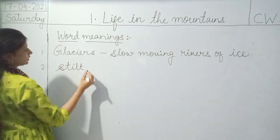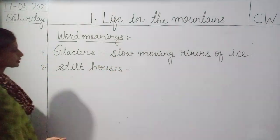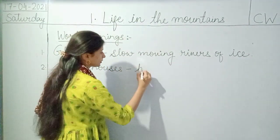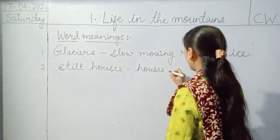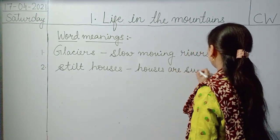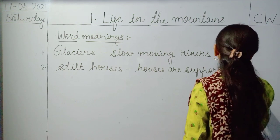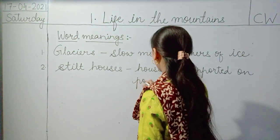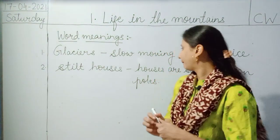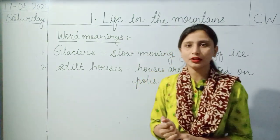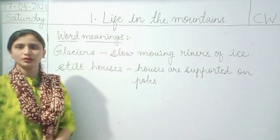The second word meaning is Stilt Houses — S-T-I-L-T H-O-U-S-E-S. What do you mean by stilt houses? Houses which are supported on poles are called as stilt houses.